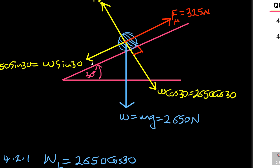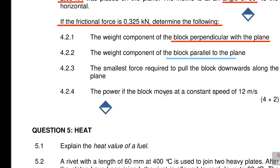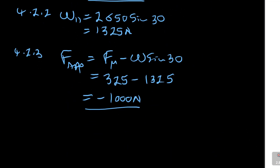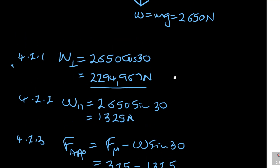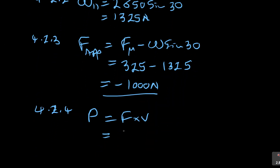The next question asks for the power if the block moves at a constant speed. Power P is question 4.2.4. P equals F times V. The force required is 1,000 newtons and the velocity is 12 m/s, so 1,000 times 12 gives 12,000 watts.